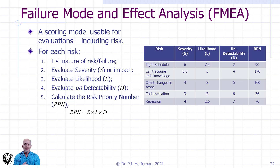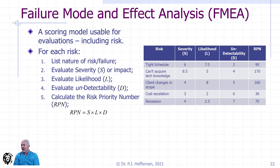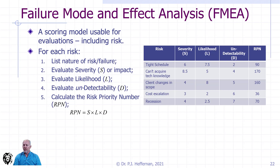We can see an example in the table shown here. We have a series of risks: tight schedule, technology not acquired, changes in scope, cost escalation, and economy going into recession. In each case, we've identified the severity, the likelihood, and the undetectability. We're using a scale of 1 to 10, where 1 is on the benign or low-impact side and 10 is severe. The larger the number, the higher our concern and the greater attention we'd want to pay to that particular risk.